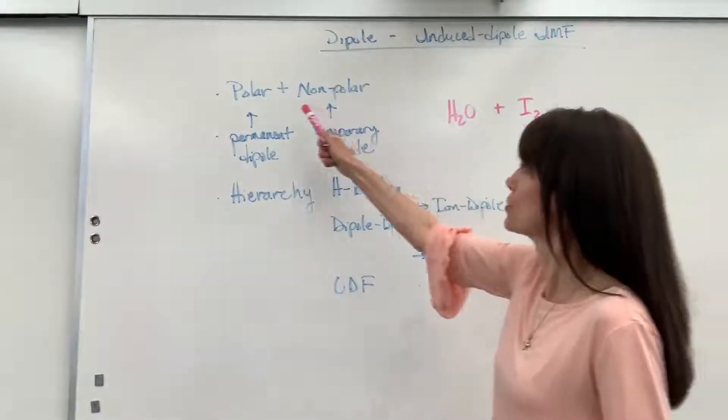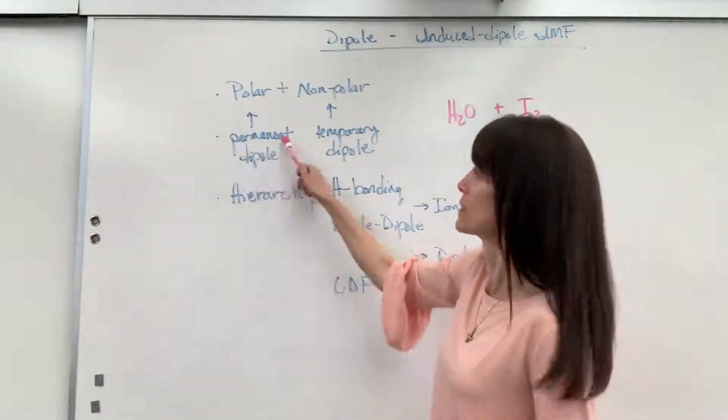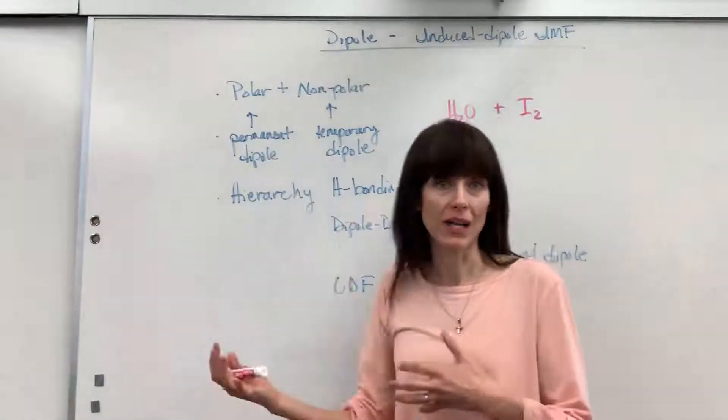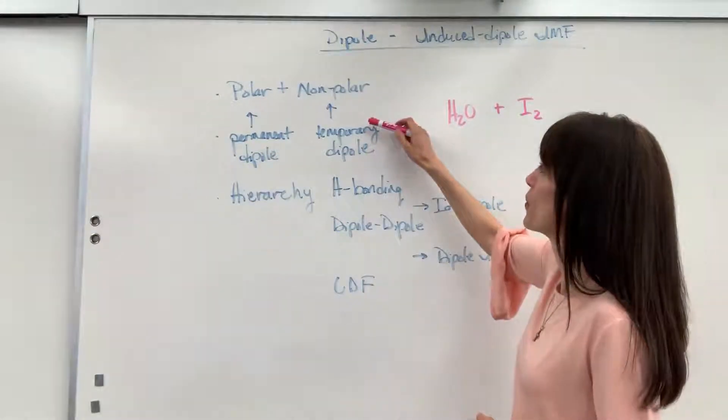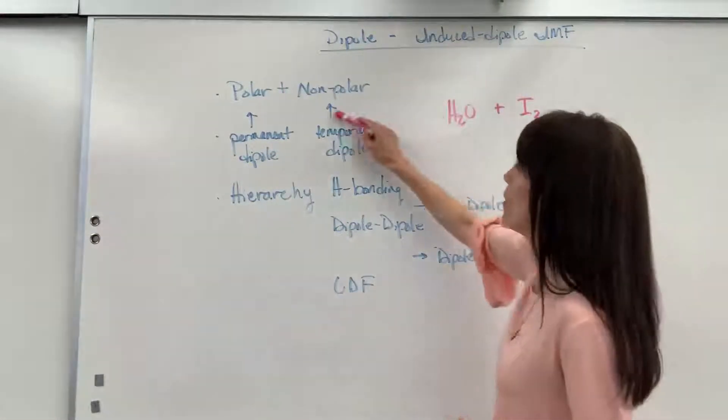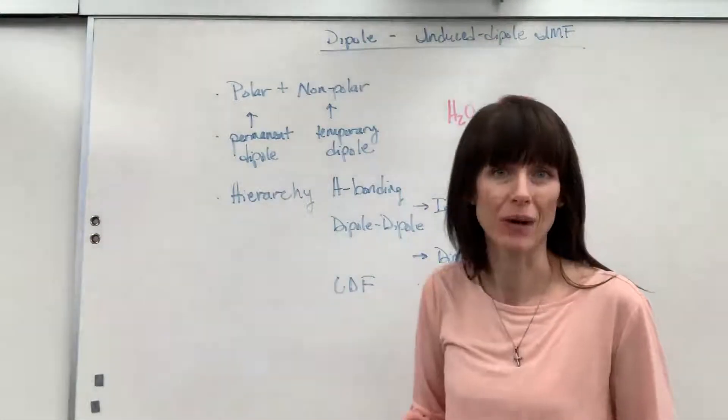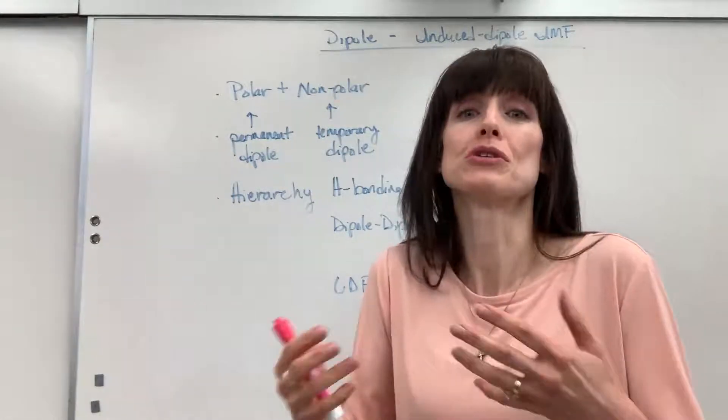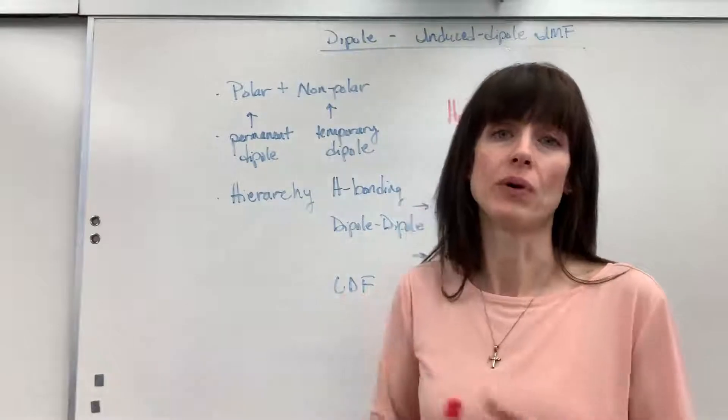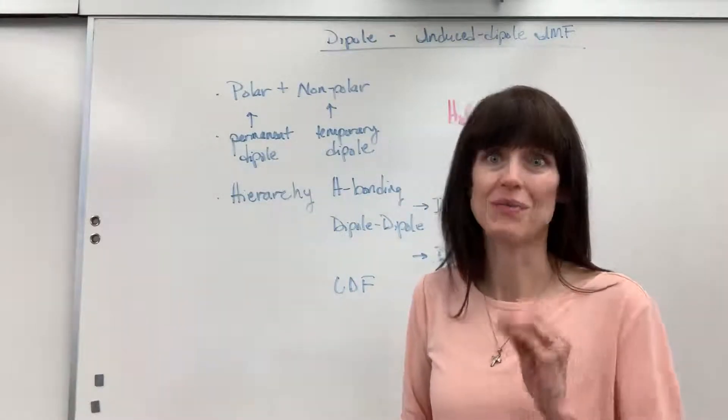So really what that means is you have a polar molecule that has a permanent dipole, a partial negative and a partial positive, with a non-polar molecule. So we're going to induce a dipole, and that induced dipole is temporary. Very similar to London dispersion forces, we're going to create, for a moment, a dipole in a non-polar molecule.